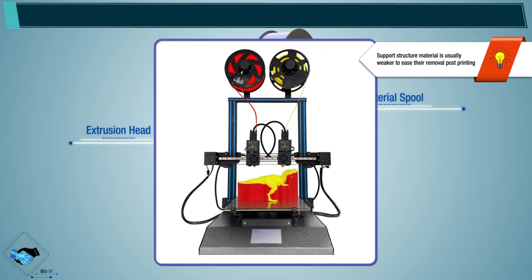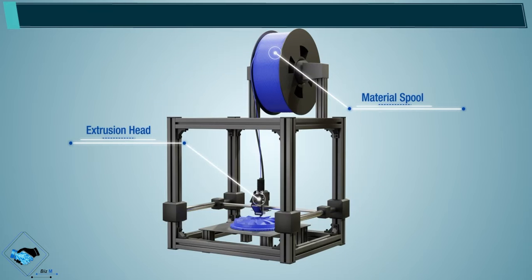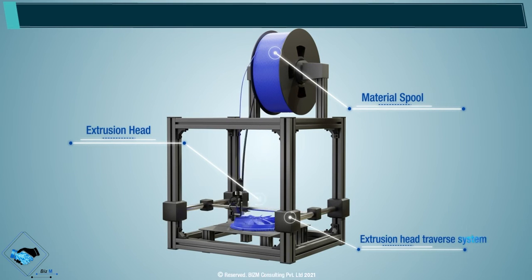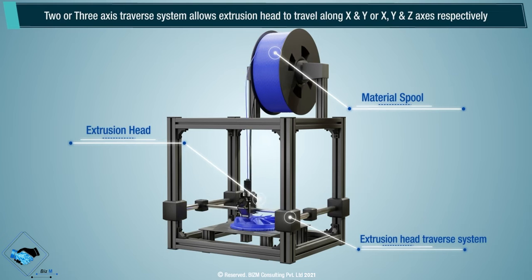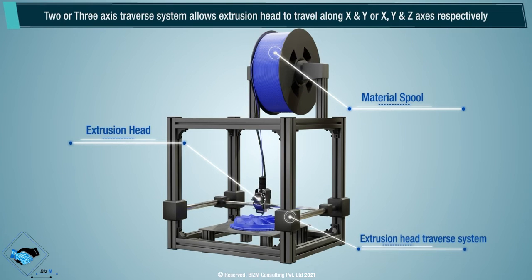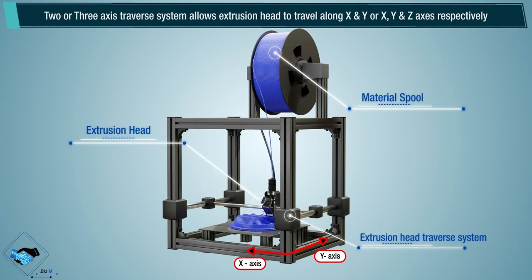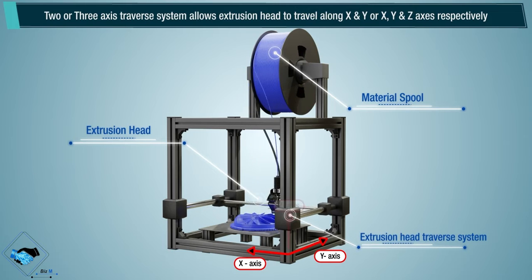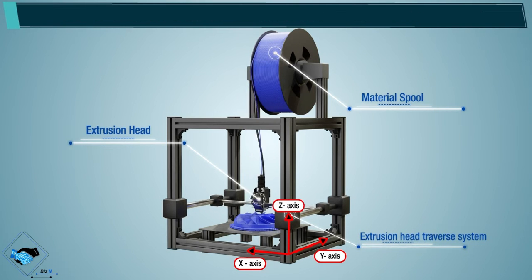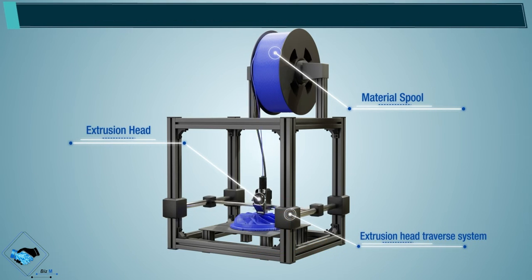Support structure material is usually weaker to ease its removal post-printing. A 2- or 3-axis traverse system allows the extrusion head to travel along the X and Y, or X, Y, and Z axes respectively.